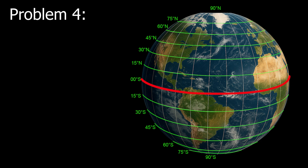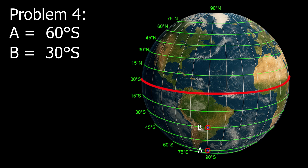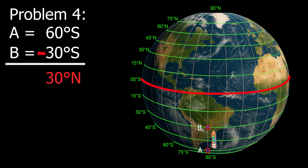Example number 4: Point A, 60 degrees south. Point B, 60 degrees south. The difference is 30 degrees. Since the vessel is moving north, the direction is north. Therefore, the D-lat is 30 degrees north.